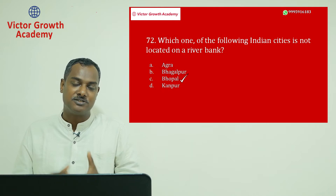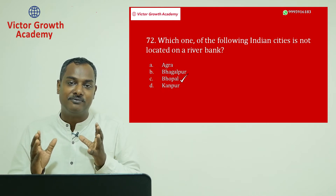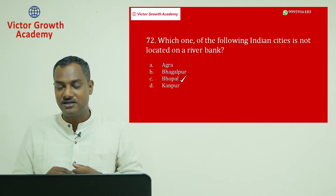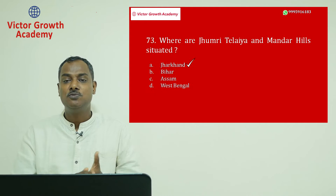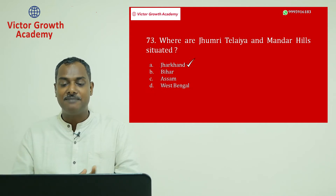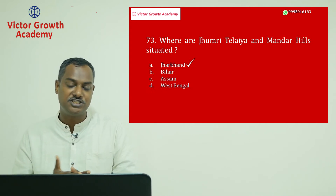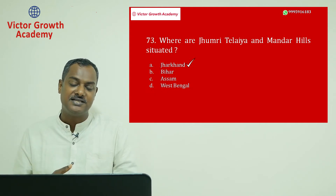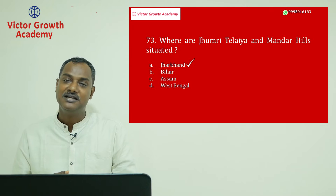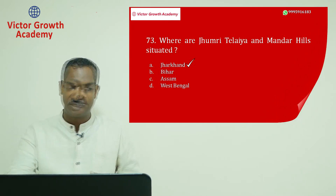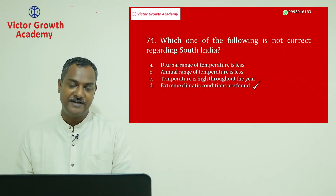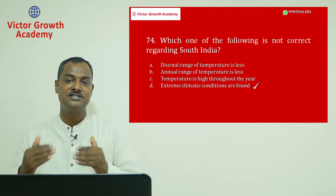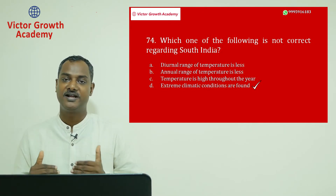Question number 73: Dhrumbri, Thalaya, and Mandir Hills are located — these are dams located in Jharkhand. Question number 74 talks about South India — south of the Satpura range is treated as South India, including Maharashtra, Andhra Pradesh, Telangana, Karnataka, Tamil Nadu, and Kerala.